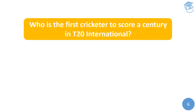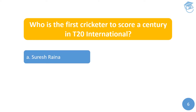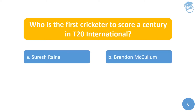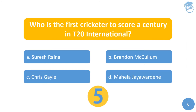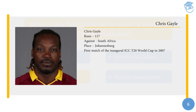Next question: who is the first cricketer to score a century in T20 International cricket? Your options are A) Suresh Raina, B) Brendon McCullum, C) Chris Gayle, or D) Mahela Jayawardena. The answer is Chris Gayle — he scored 117 against South Africa at Johannesburg in the first match of the inaugural ICC T20 World Cup in 2007.